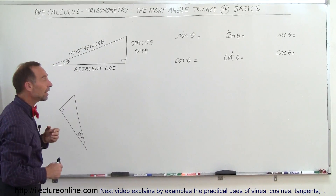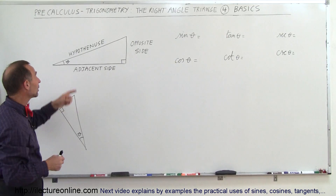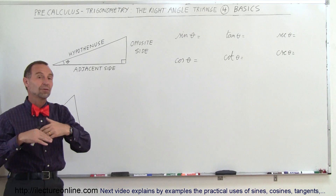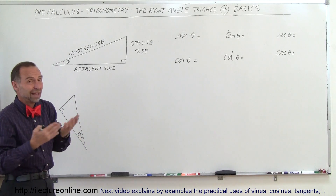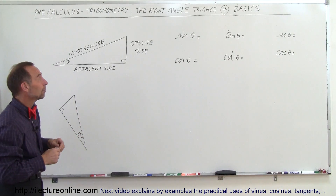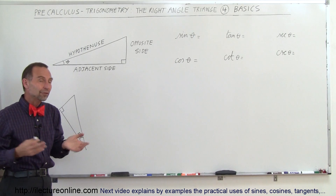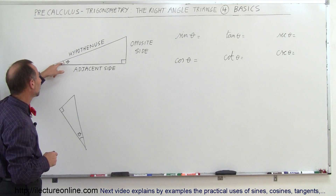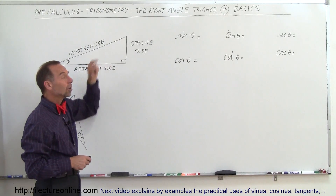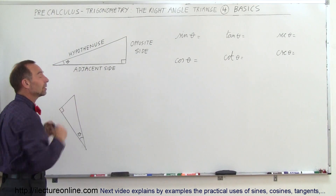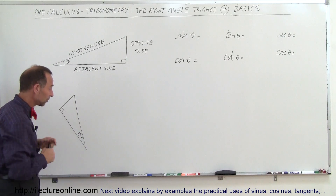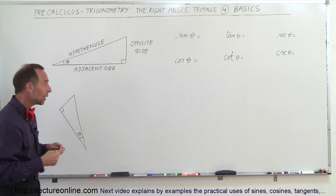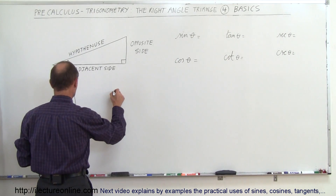Here we have the angle indicated as theta. Now of course there are two other angles — we can call either of them theta. Theta is simply a Greek symbol; we can call it alpha, beta, or gamma, or any letter we want. Theta is very typical for angles. It doesn't matter how the triangle is oriented either — we can orient it differently and choose which angle we call theta.